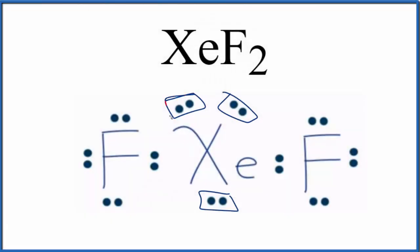So to recap, we have one, two, three lone pairs for XeF2, and then we have two bonding pairs of electrons. This is Dr. B. Thanks for watching.